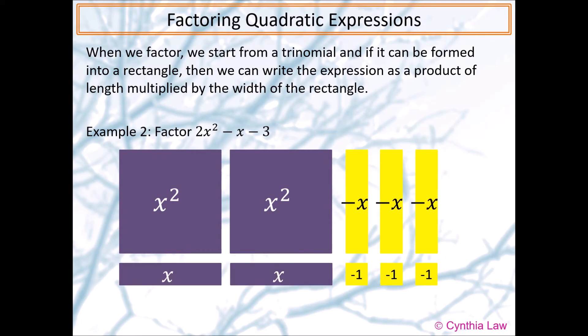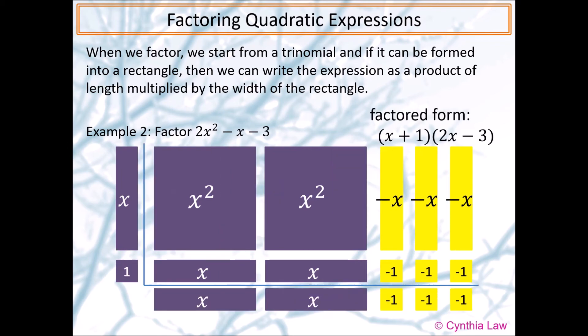Next, we place the strips to form a large rectangle. The width of the large rectangle is x + 1. Its length is 2x subtract 3. So, the factor form is (x + 1)(2x - 3). We can expand this expression, and we will have 2x squared subtract x subtract 3 back.